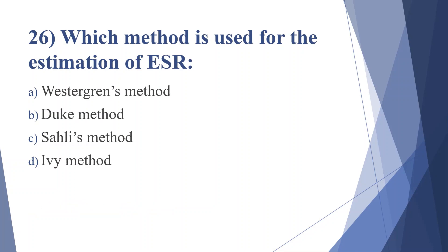Twenty-sixth question: which method is used for the estimation of ESR? Option A: Westergren's method, option B: Duke's method, option C: Salice method, option D: IV method. Answer is option A, Westergren's method.